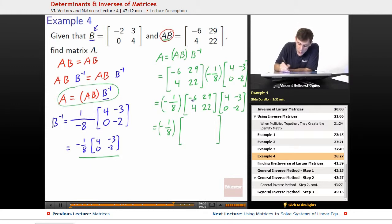Negative 6, 29 times 4, 0. Negative 6 times 4 gets us negative 24. 29 times 0 is just 0. Negative 6, 29 on negative 3, negative 2. Negative 6 times negative 3 gets us positive 18. 29 times negative 2 gets us negative 58, so that gets us a positive 40.